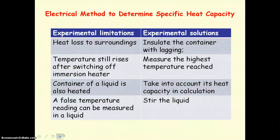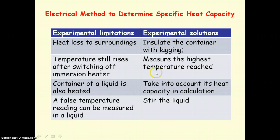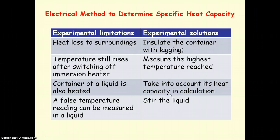Here are some experimental limitations and solutions. The obvious one is heat loss to surroundings — addressed by insulating with lagging. Also, the temperature still rises after switching off the immersion heater because the change is not instant, so you must measure the highest temperature reached. If heating a liquid rather than a solid, the container is also heated, so you must account for that in the calculation. You must also stir the liquid to avoid false readings.